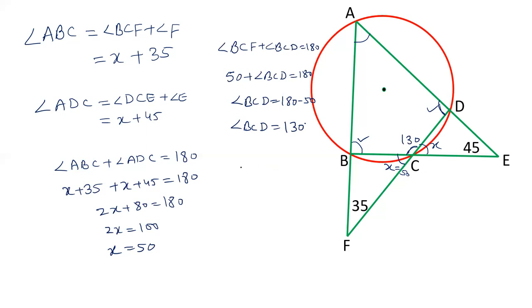Angle A and angle C are supplementary. Again, the property of cyclic quadrilateral. BCD is 130. We have to calculate angle A. So the value of angle A equals 50 degrees. This angle is 50 degrees.